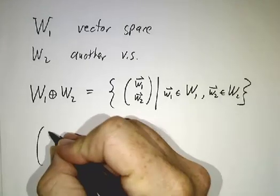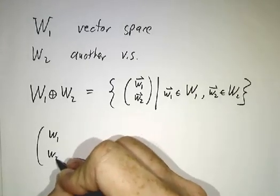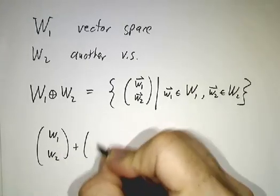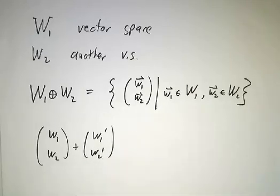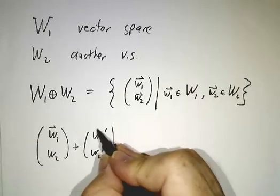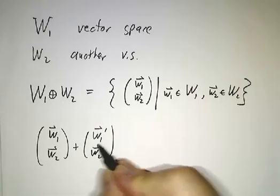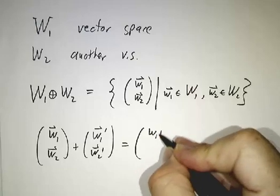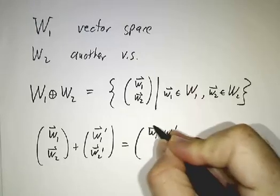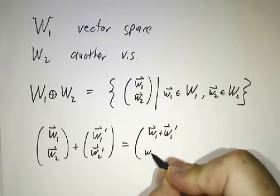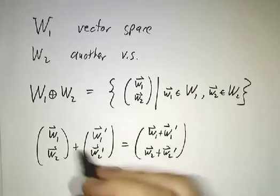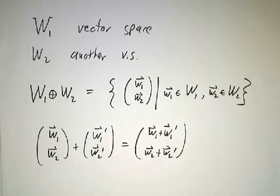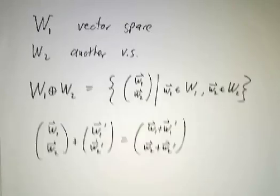If I give you (w₁, w₂) plus (w₁', w₂'), and I guess I should put arrows on these to show that they're vectors, then you just add each term separately. Basically what's happening in the first entry and what's happening in the second entry just don't talk to each other at all.